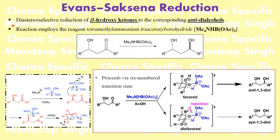This particular method uses a diastereoselective reduction of beta-hydroxyketone to corresponding anti-diol alcohols, and the reducing agent used in this particular method is called tetramethylammonium triacetoxyborohydrate. This is the exact mechanism of the reaction and it proceeds by a six-membered transition state.